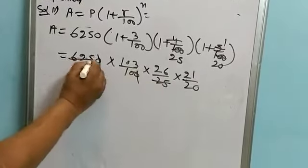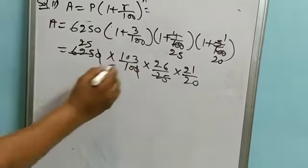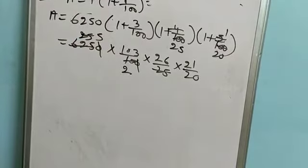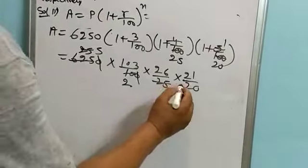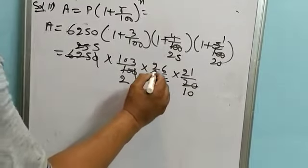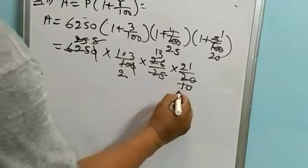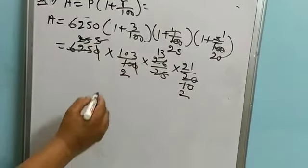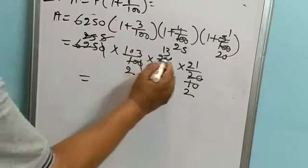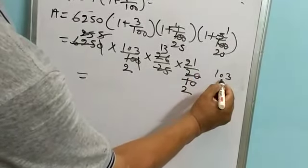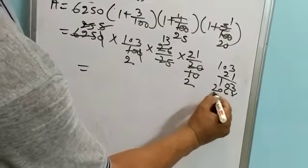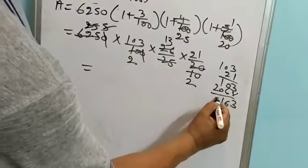Canceling: 25, 25 cancel. 5 into 2 is 10, 5's are 5. Here is 10 and 2. Now the multiply of 103 into 21: 3 times 1 is 3, then 6, 0, 2, then 2, giving us 2163.